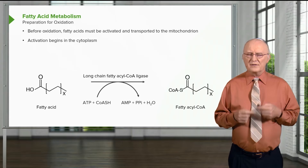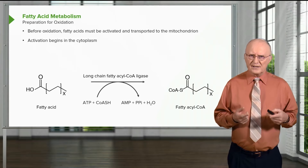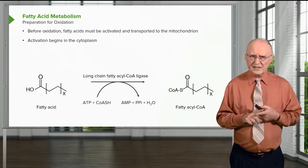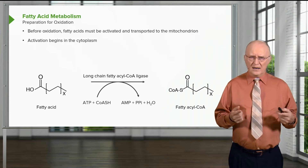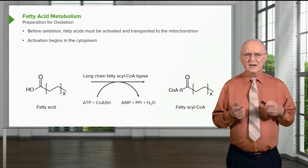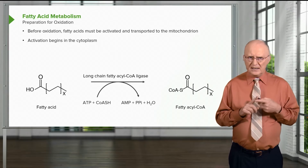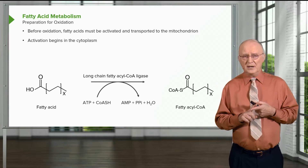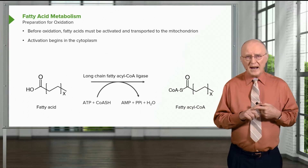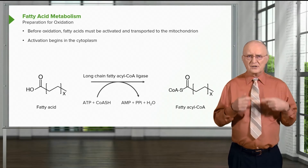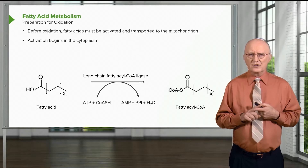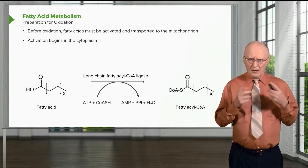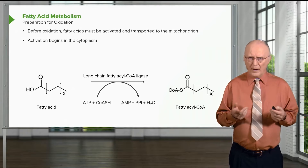The activation of a fatty acid begins in the cytoplasm and involves the attachment to the fatty acid of a molecule called coenzyme A, or CoA. This is an energy-requiring step — ATP energy is needed — and the product is not ADP as we've seen many times before, but actually AMP. That reflects the fact that this is a pretty high energy bond being created. The result is a molecule called fatty acyl-CoA.